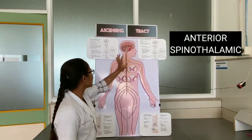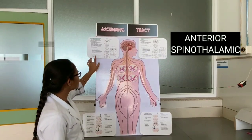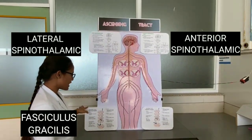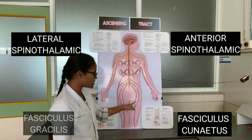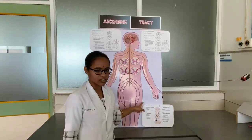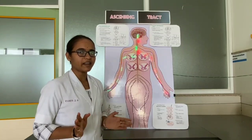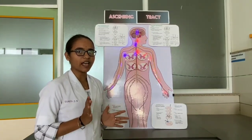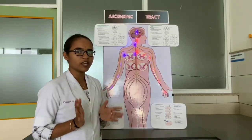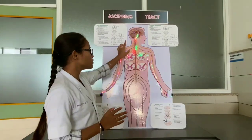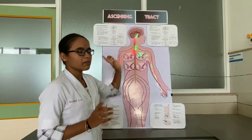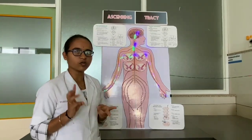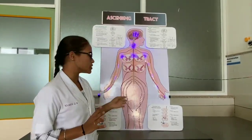These include the anterior spinothalamic tract, lateral spinothalamic tract, fasciculus gracilis and fasciculus cuneatus. The ascending tract of the spinal cord carries impulses of various sensations towards the brain. The pathway for each sensation is carried by two or three groups of neurons.